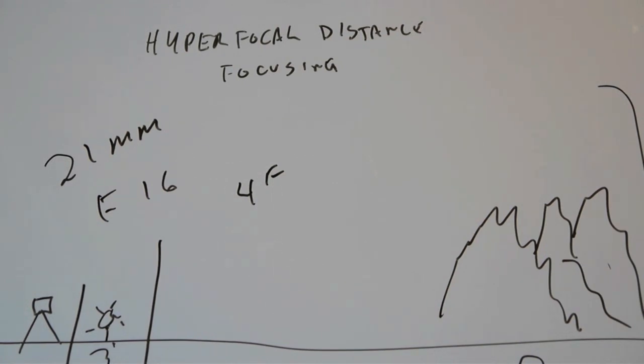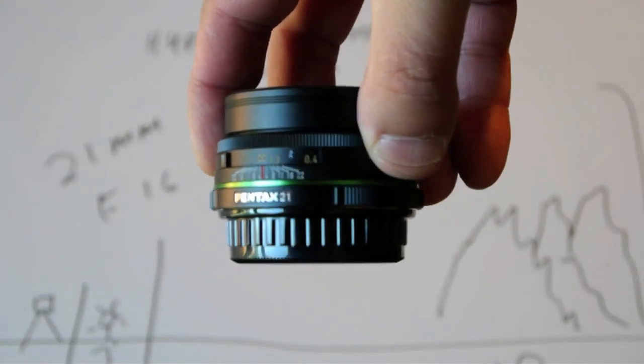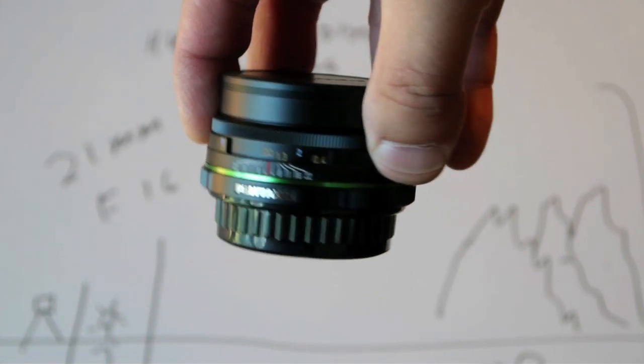And that's one of the main reasons why these prime lenses are so cool. Because they have those scales on them. And we like that.